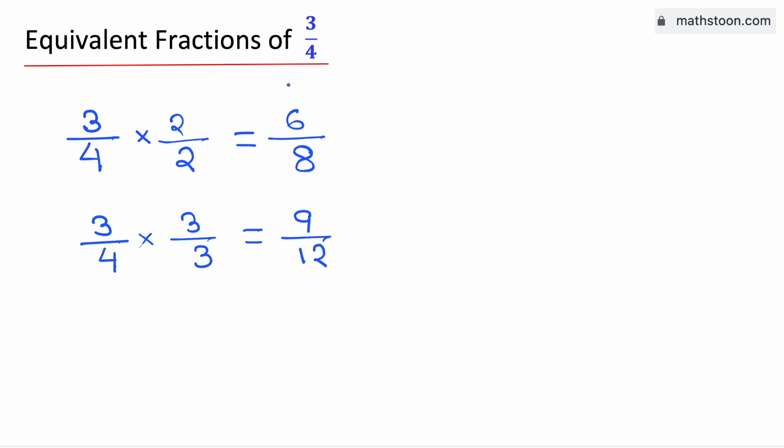And to get the third equivalent fraction of 3 fourth, we will multiply both the numerator and the denominator by 4. By doing so, we have 3 times 4 in the top, which is 12, and 4 times 4 in the bottom, which is 16.